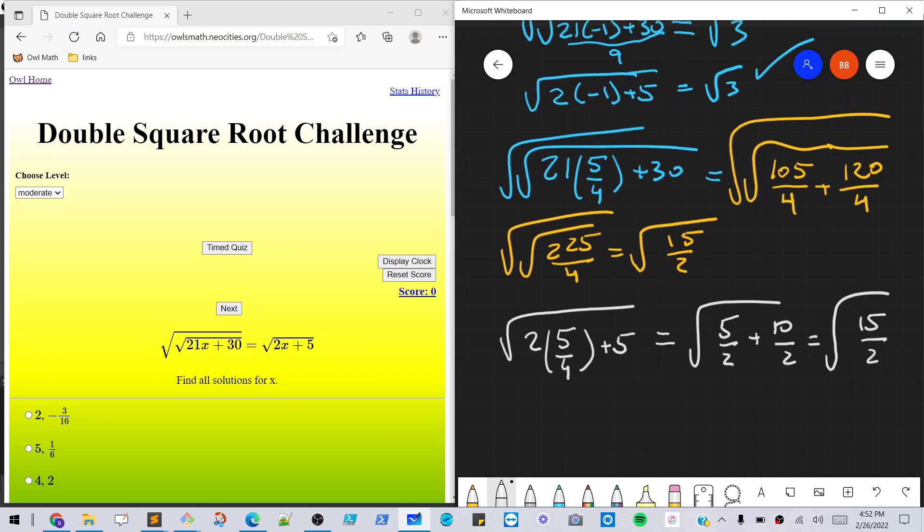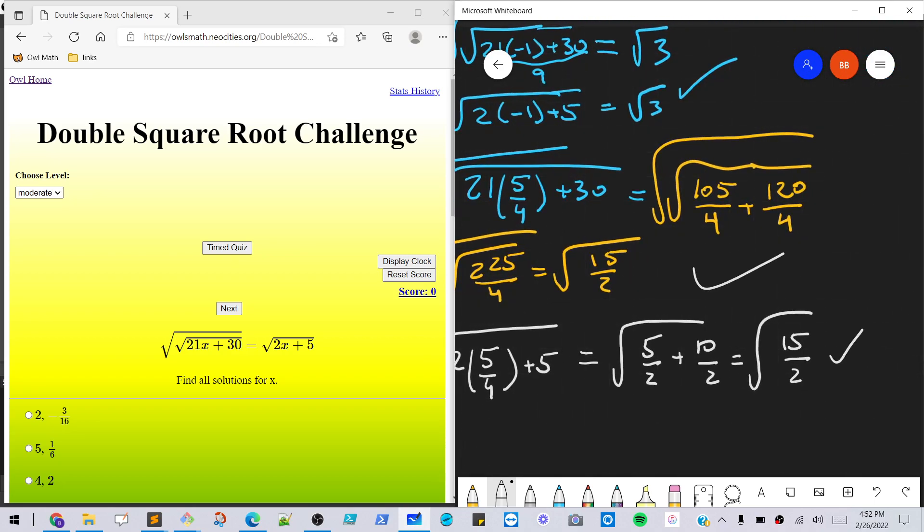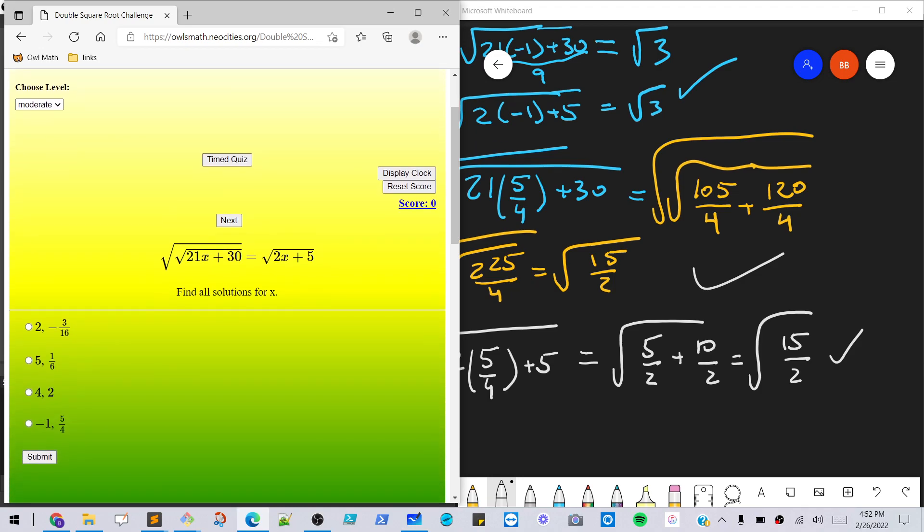Whoa. Sorry about that. Okay, so we have our two solutions. Let's just check our answer here. Minus one, five fourths. That's correct.